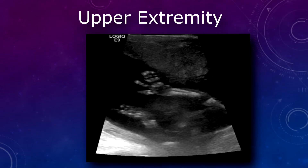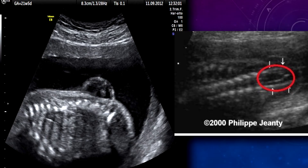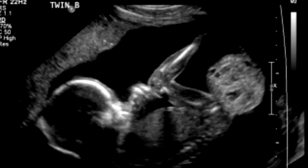From here, you may proceed to do the upper extremities or the spine — it really doesn't matter which you do first. For the upper extremities, you need to make sure you get the humerus, radius and ulna, and the hand showing all the fingers. Once you go to the spine, you would want to take sagittal images of the cervical, thoracic, lumbar, and sacral spine. You can also get coronal and transverse views. You can rule out things like spina bifida at the spine, and at the sacral region things like sacrococcygeal teratoma.